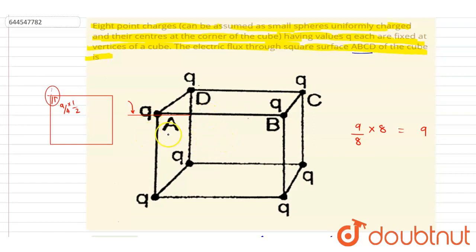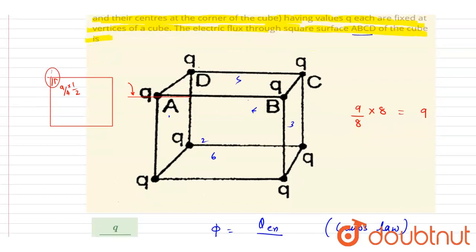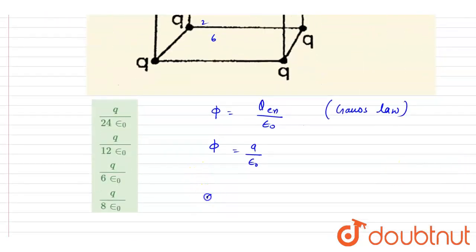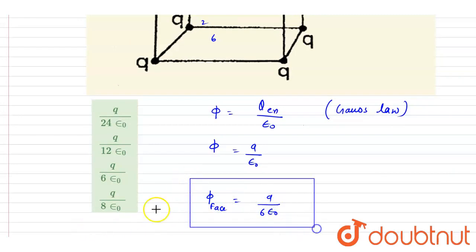If you see, there are six faces: one, two, three, four, five, six. And all the six are having symmetry, so flux through each face will be the same. So if I write down the flux through one face, it will be one by six of this, so it is q by six epsilon naught. Now you can check for the option: q by six epsilon naught is the correct one. Thank you.